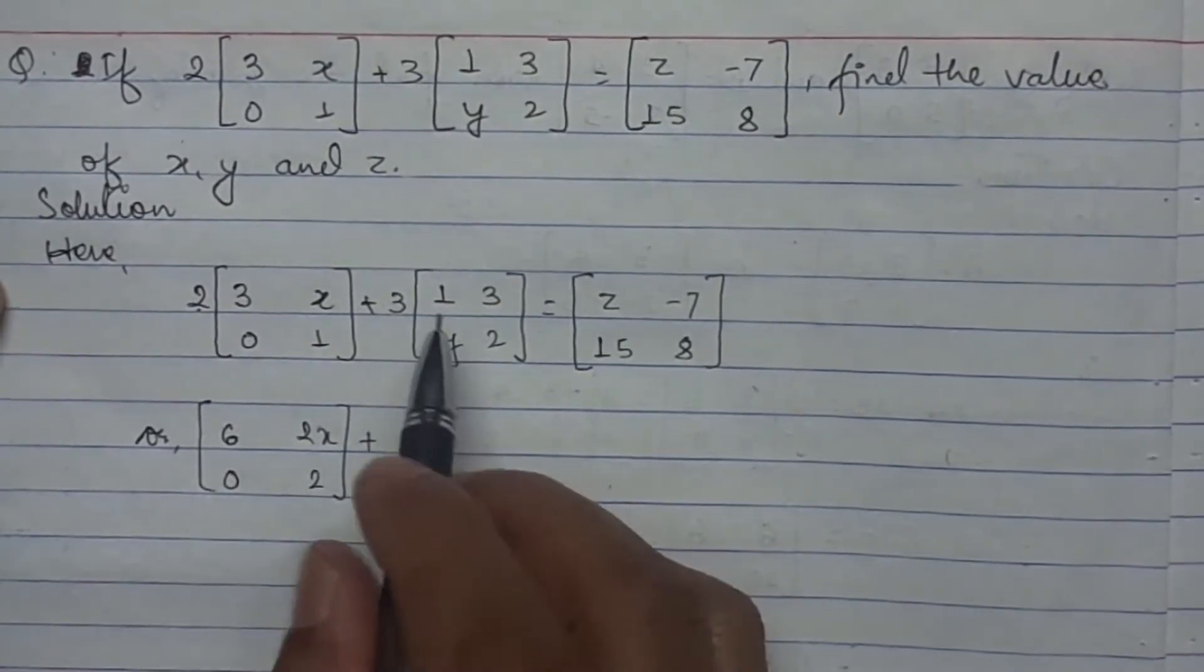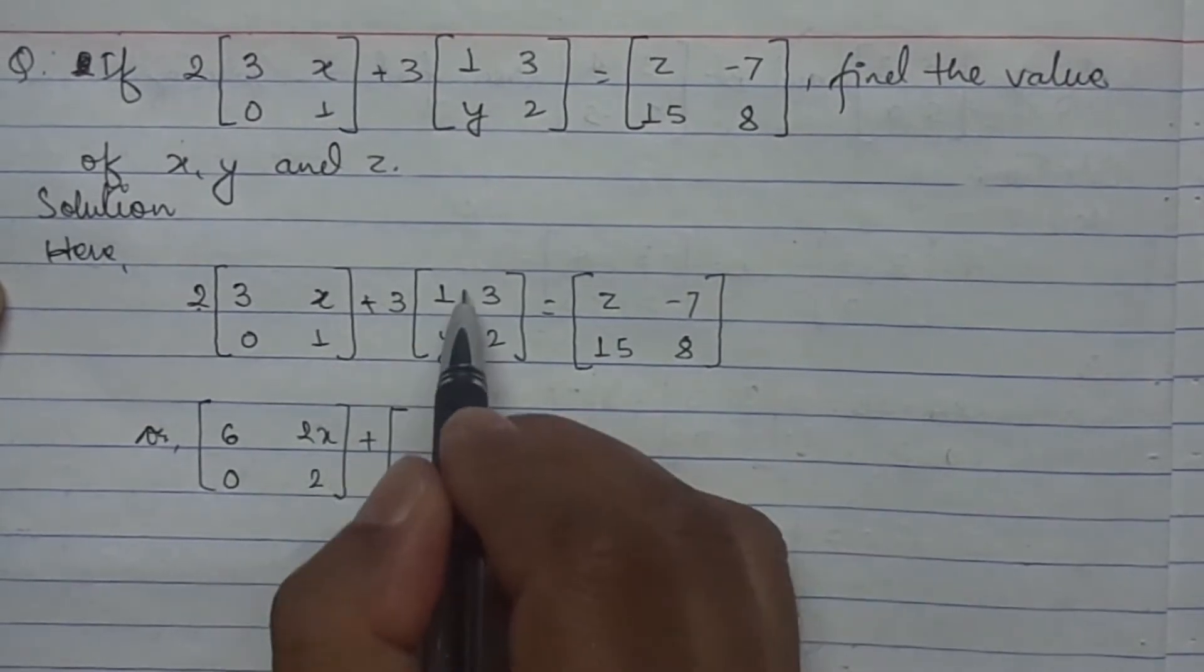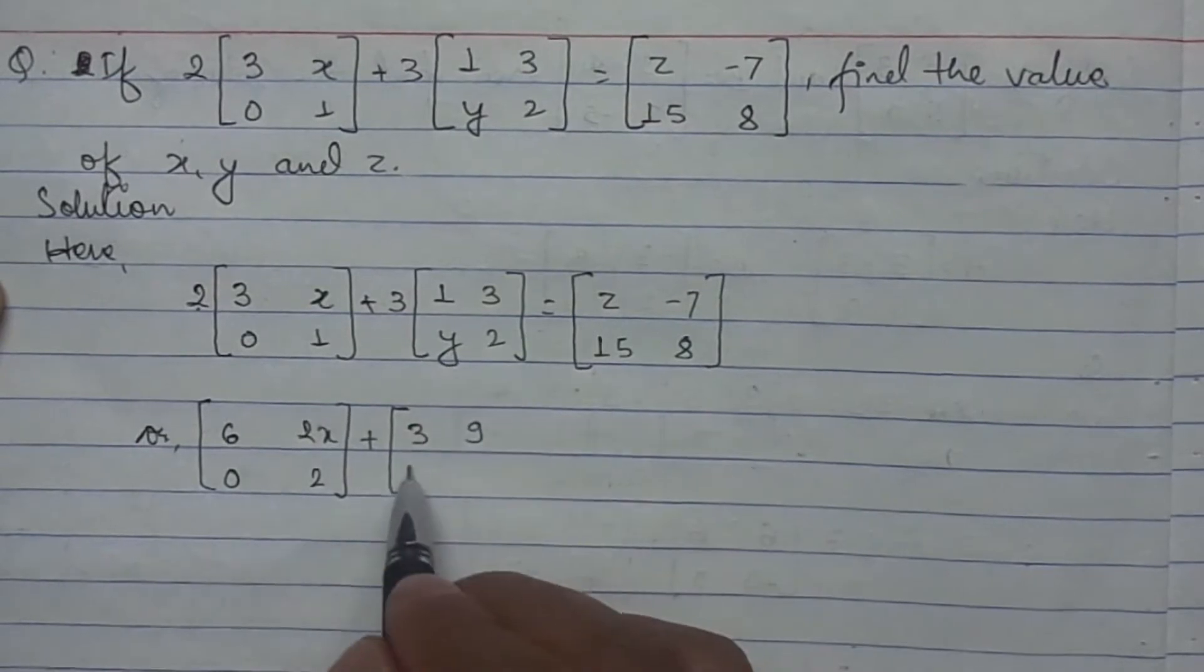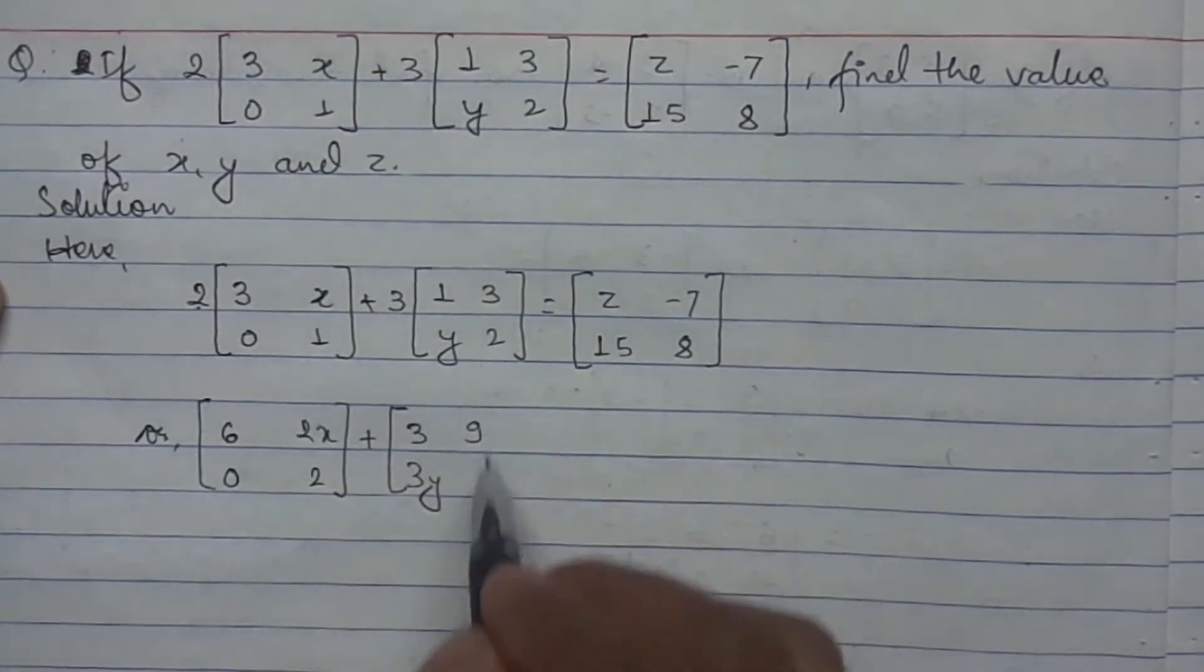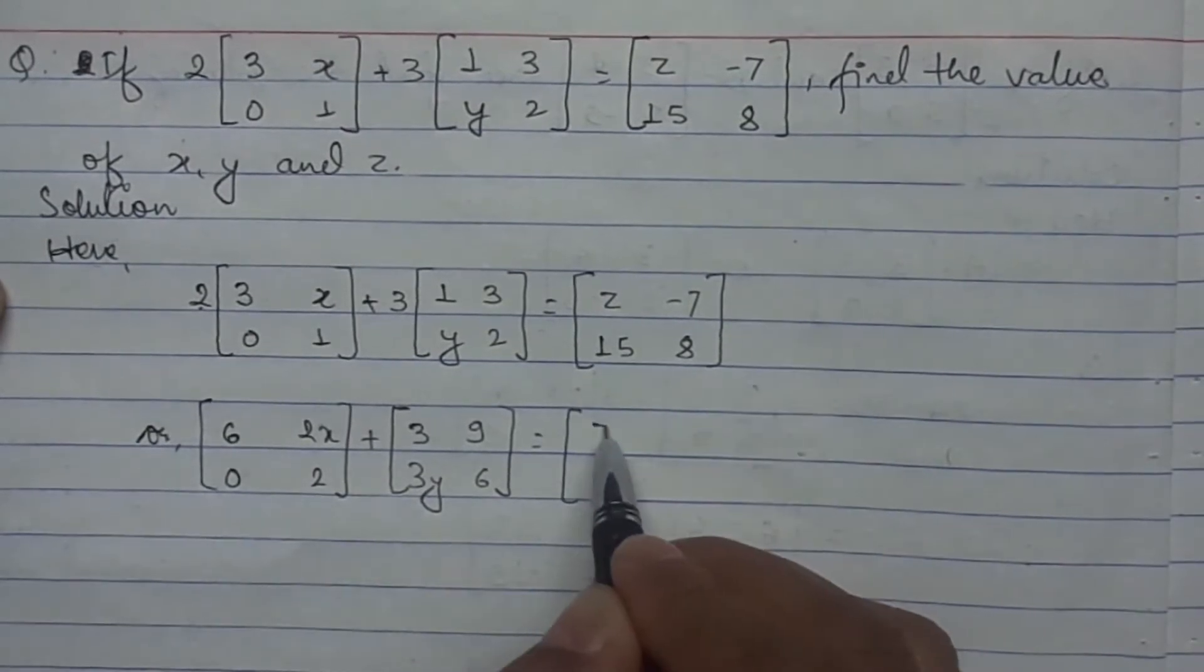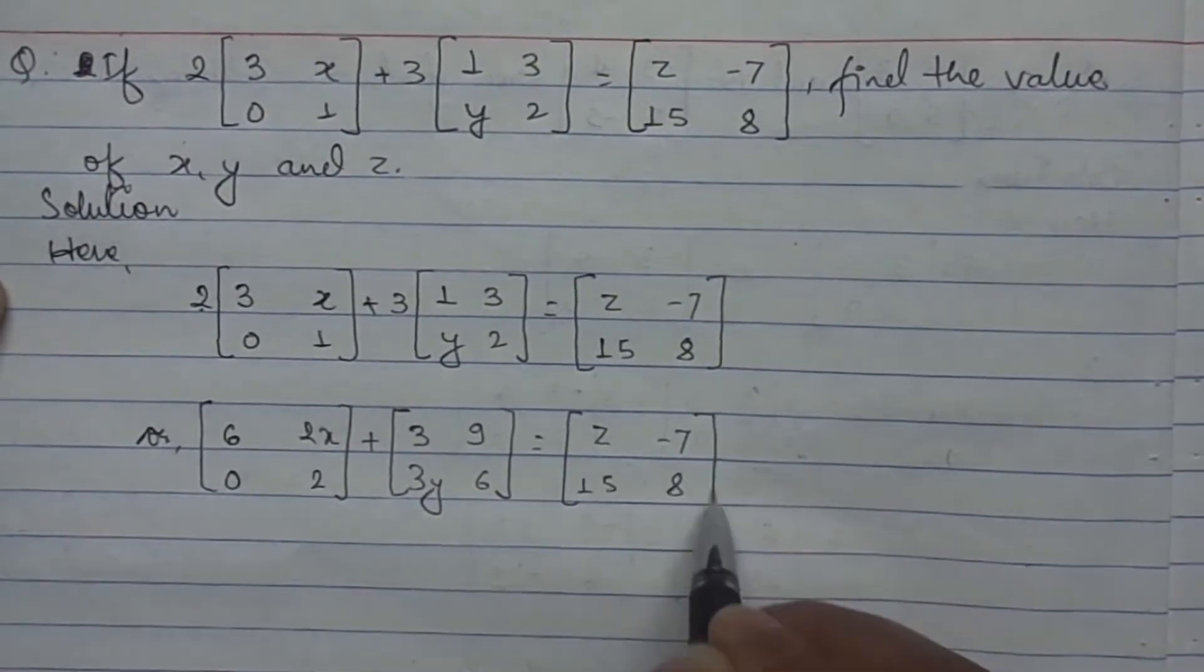The next matrix we need to multiply by 3. 3 into 1 is 3, 3 into 3 is 9, 3 into y is 3y, 3 into 2 is 6. This equals [z, -7; 15, 8].